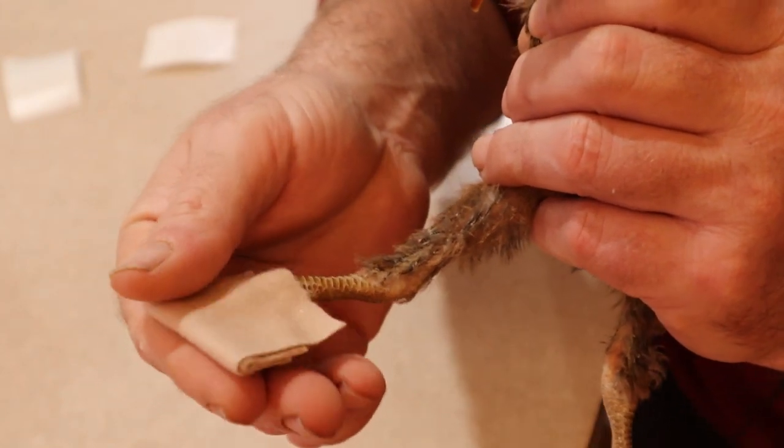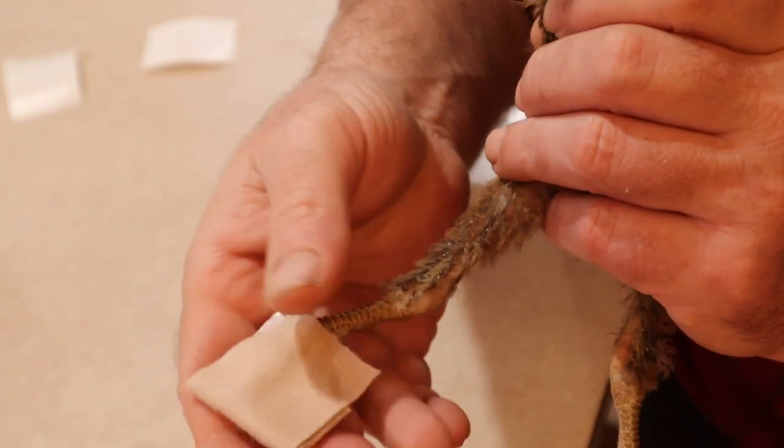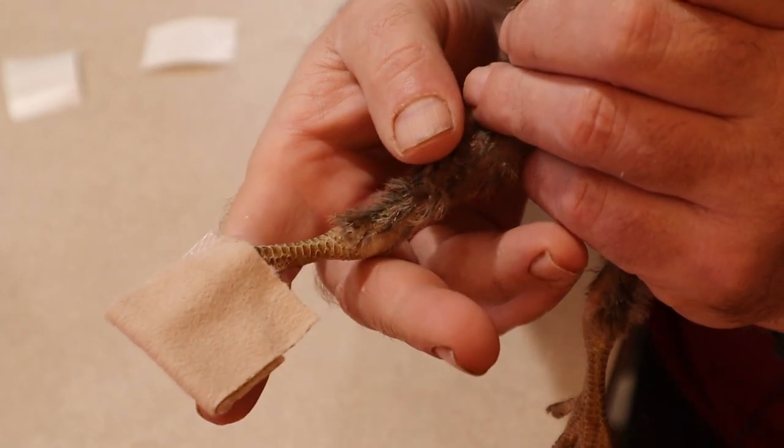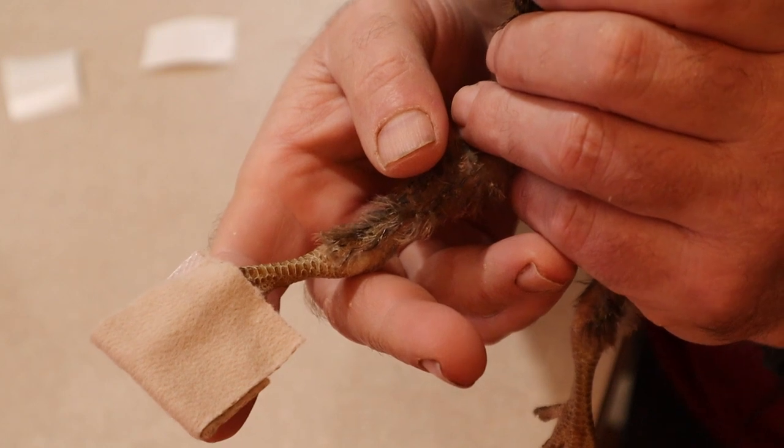You're going to leave that on there for about two weeks. And when you take it off, it's going to be fully healed and back to normal. So that's how you fix and solve chicken curly toes.